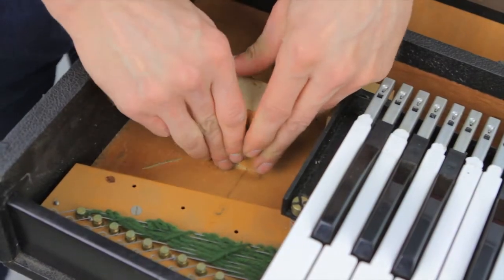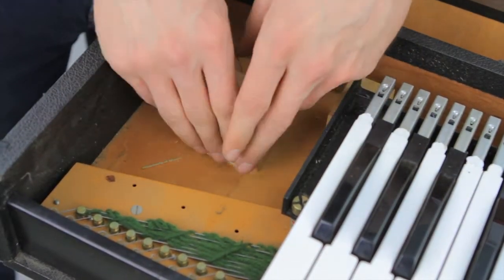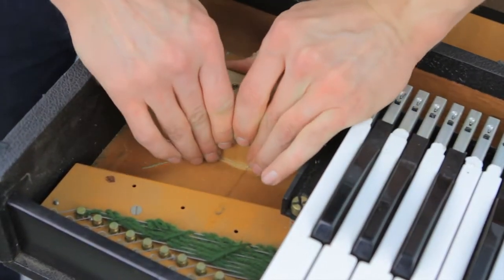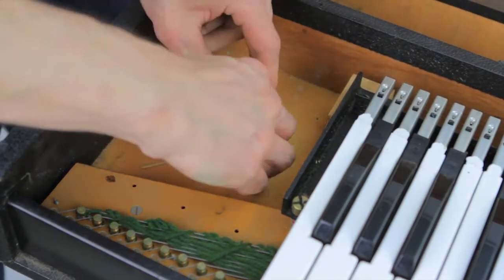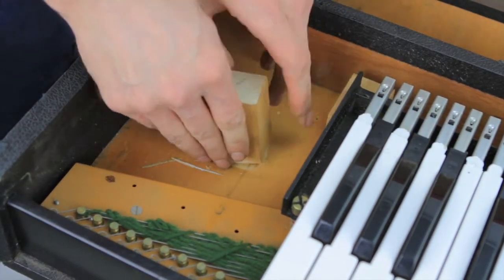Once the edges have been scored, begin to move the block to further break the glue's bond. Once the block has been sufficiently loosened, utilize a twisting motion to free it from the base.